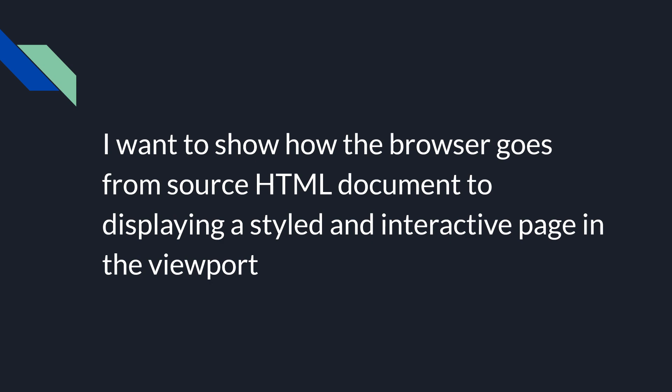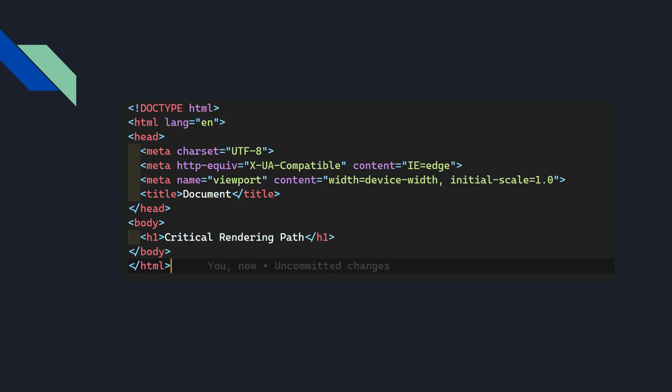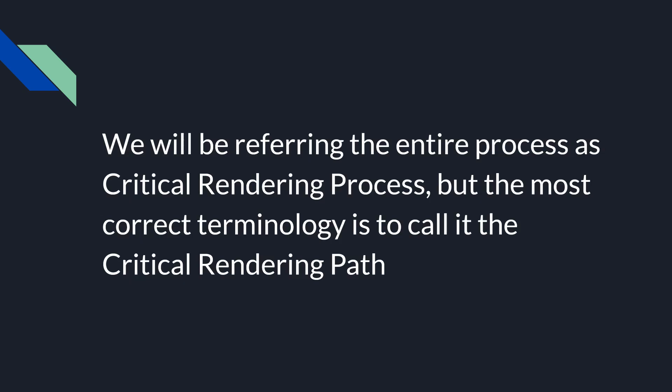So how does the browser go from the source HTML document to displaying a styled and interactive web page? This is our sample HTML document — the doctype, HTML, and all the elements. We will be referring to the entire process as the critical rendering process, but the most correct terminology is to call it the critical rendering path.